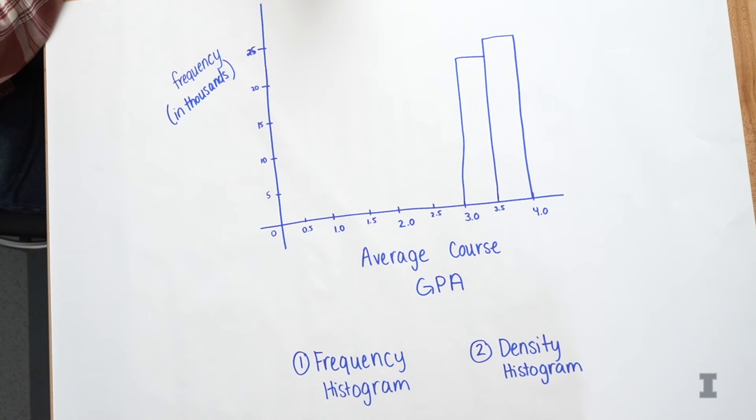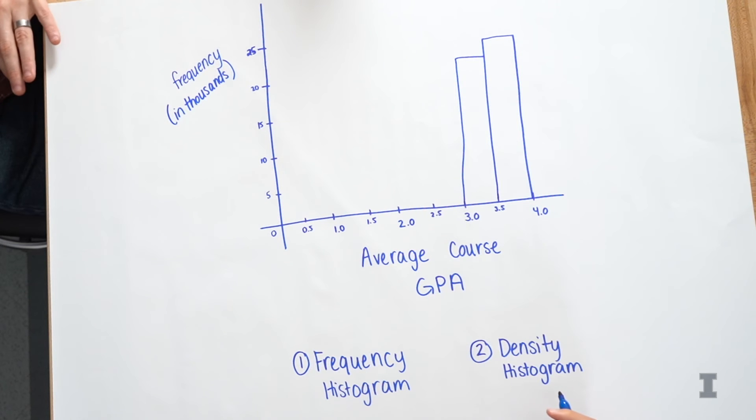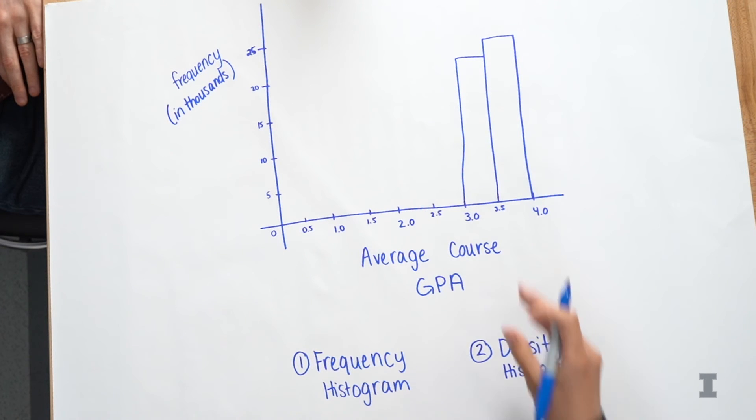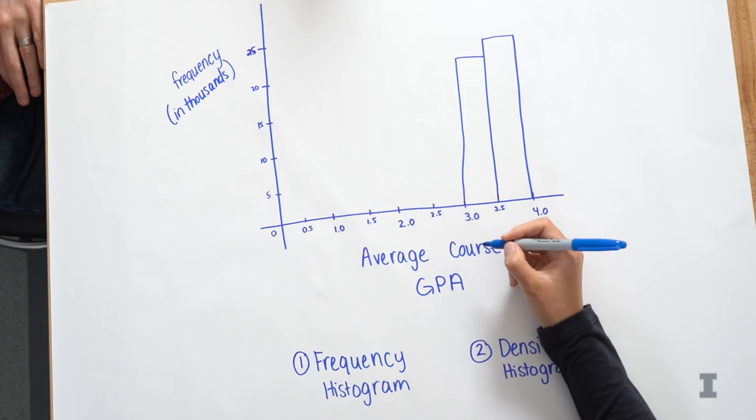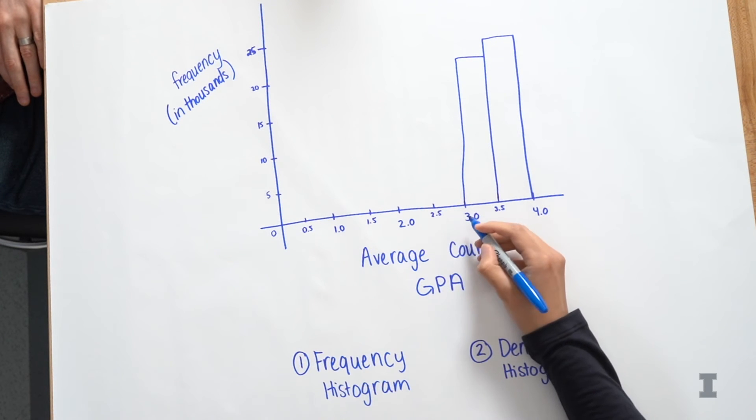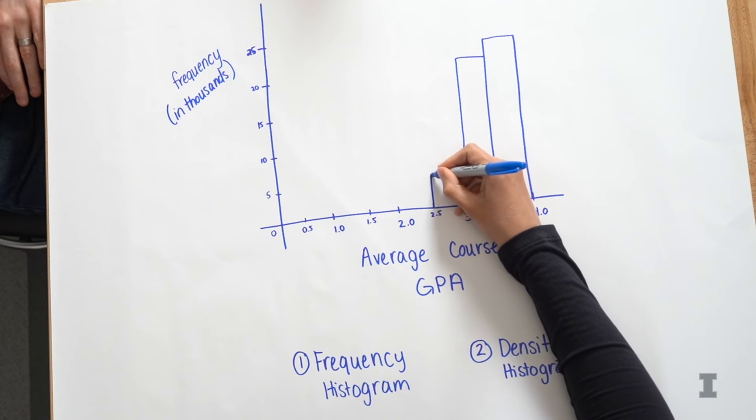So going down to the next bucket, we have all of the courses that have an average course GPA between 2.5 and 3. There were 8,836 courses in our data set with that average GPA. All right. So that goes down. I guess that's good. We want people to get a good grade. So it's good that these are higher. All right. So we said 2.5 to 3.0 is about 8,000, just over 8,000. 8,836.